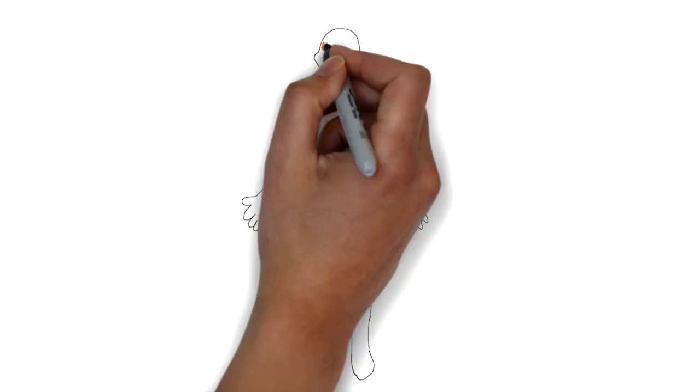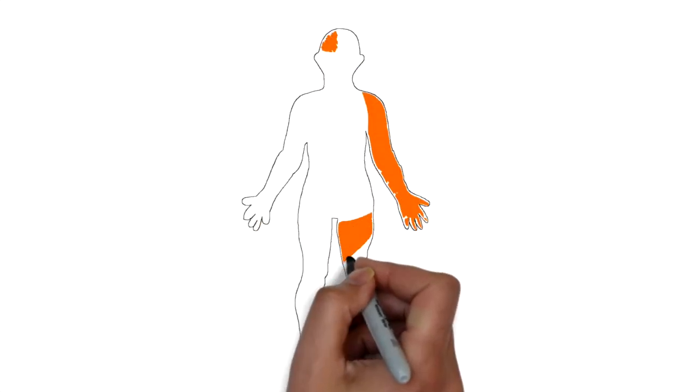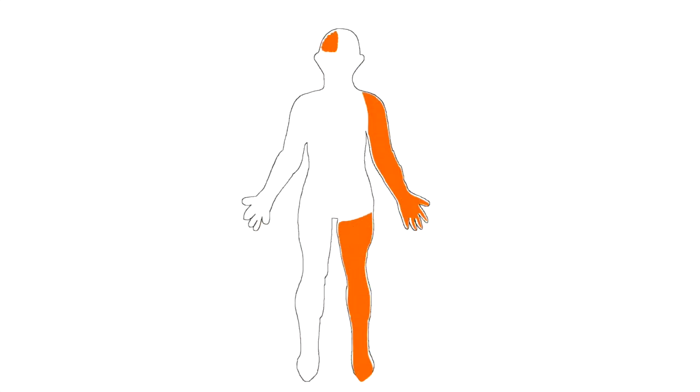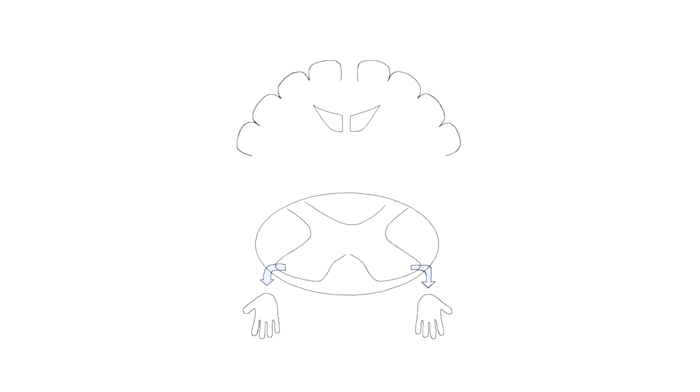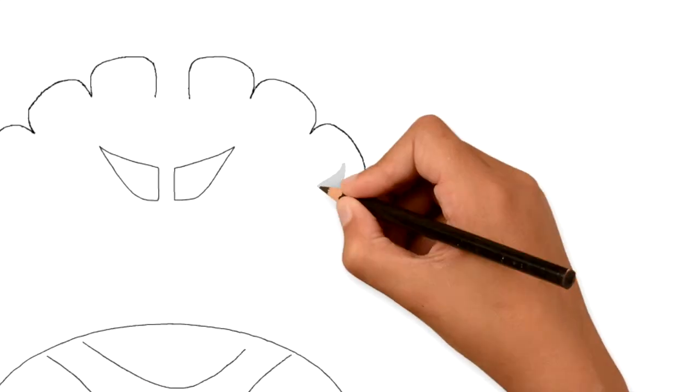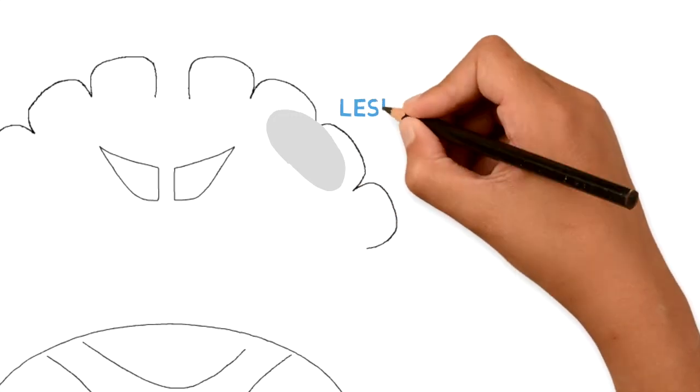This is why the right side of the brain controls the left side of the body. In some children with unilateral brain injury, however, because of their early brain injury...